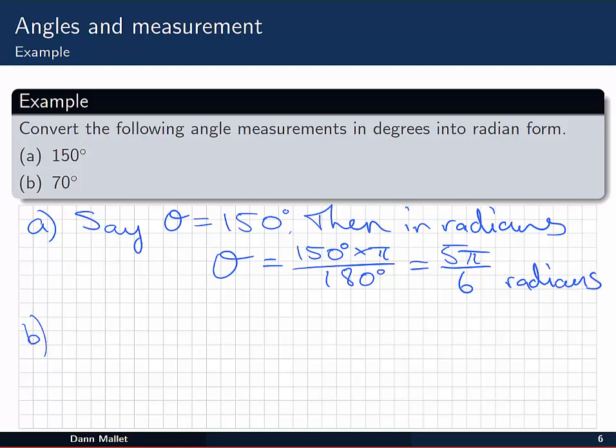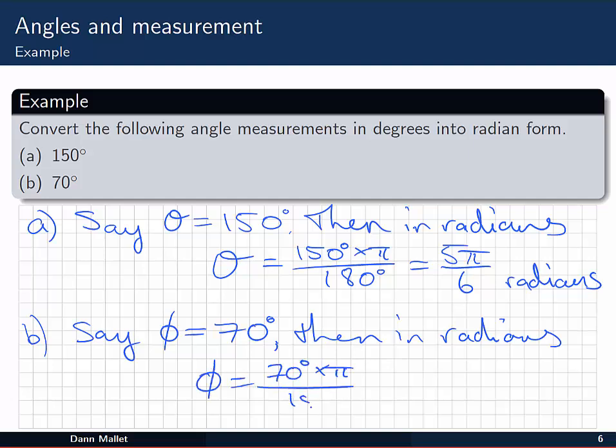We can do a similar thing for part b. I'm going to say, this time I'll use a different Greek letter, I'll call it phi. Phi is 70 degrees. Then in radians, phi is equal to 70 degrees times π divided by 180 degrees, or 7π on 18 radians. Again, leaving it in the fractional form multiplied by π.